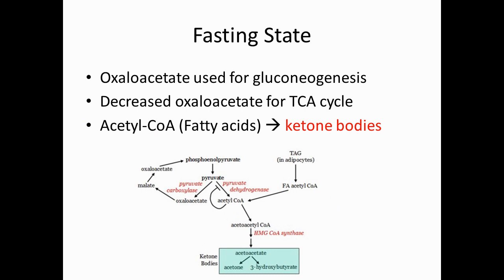Now we'll see what happens in the fasting state and how ketone bodies are generated. First, oxaloacetate is used for gluconeogenesis. Pyruvate converts into oxaloacetate, and that oxaloacetate goes into gluconeogenesis. Pyruvate also converts into acetyl-CoA with the help of pyruvate dehydrogenase. Acetyl-CoA also comes from fatty acids from adipose tissue, causing acetyl-CoA levels to rise.